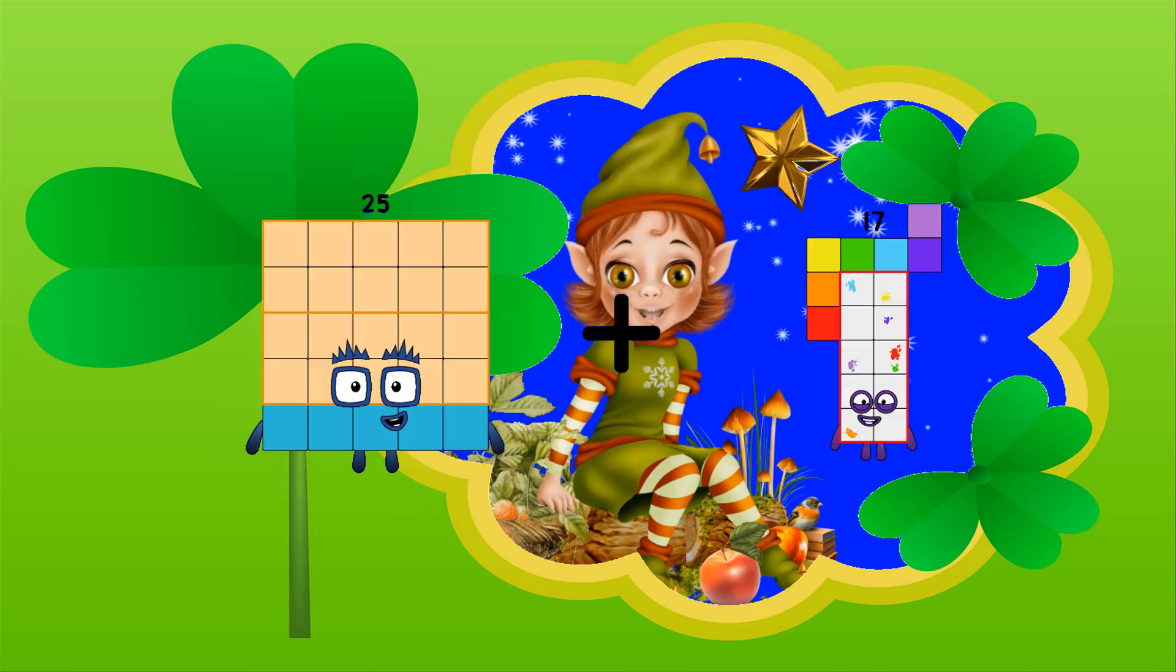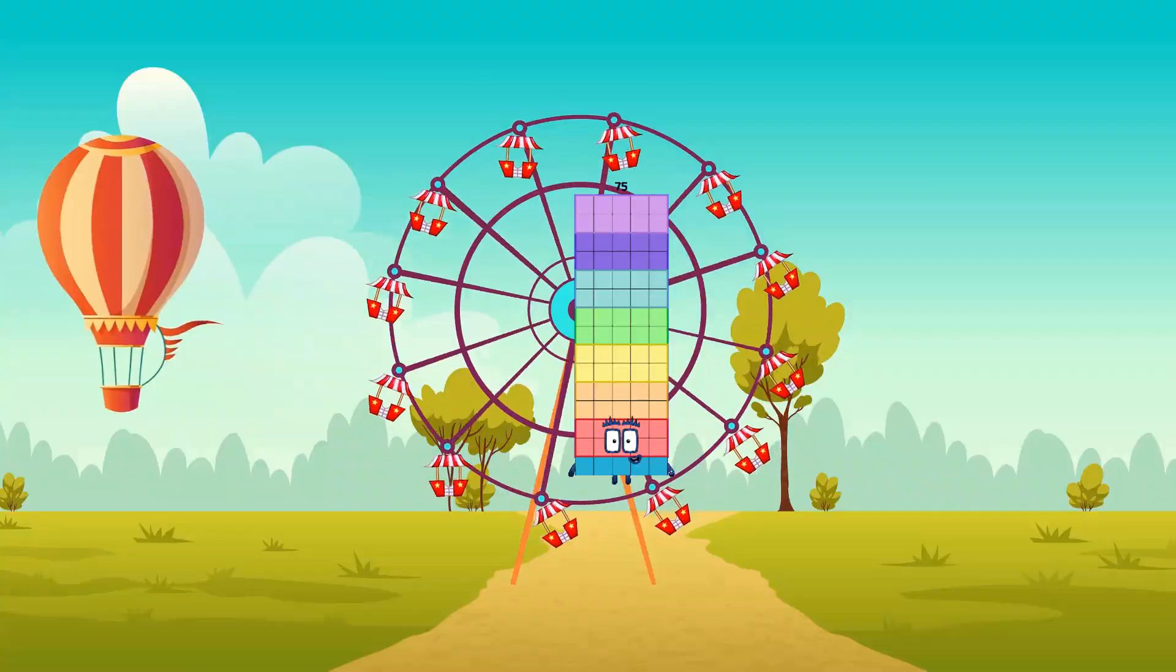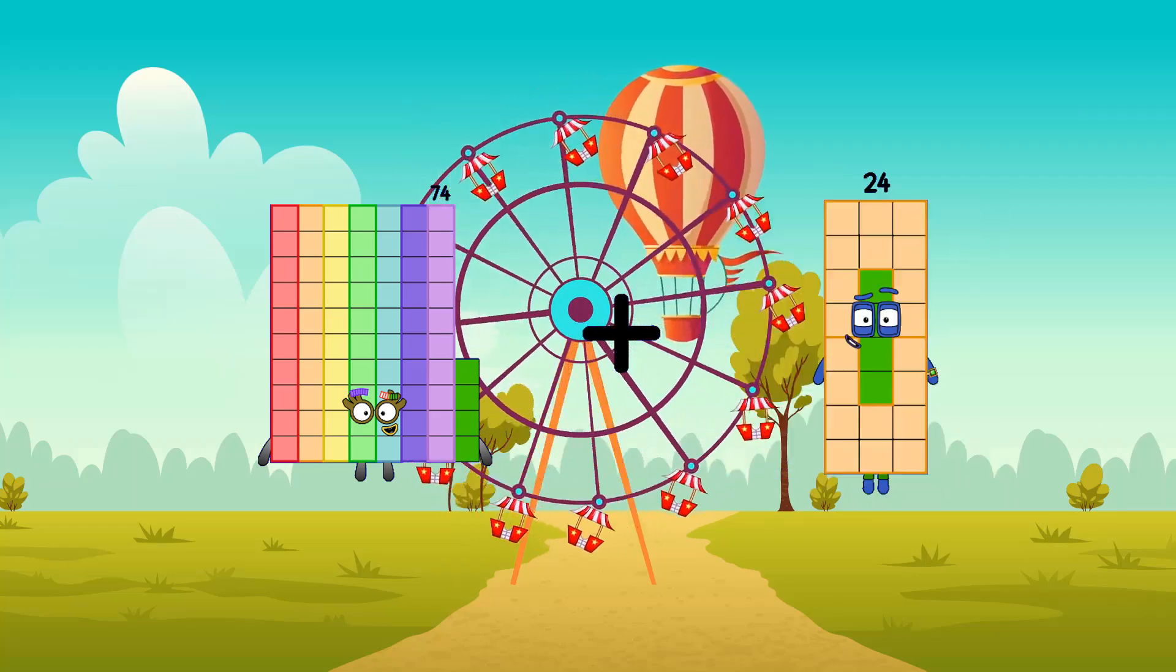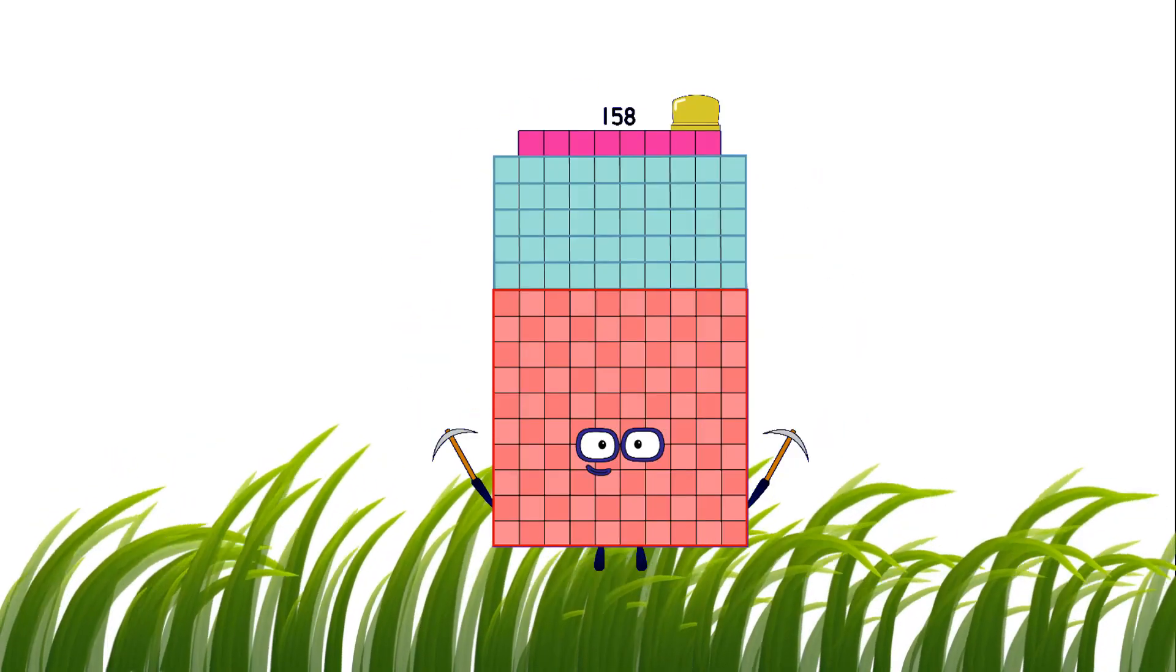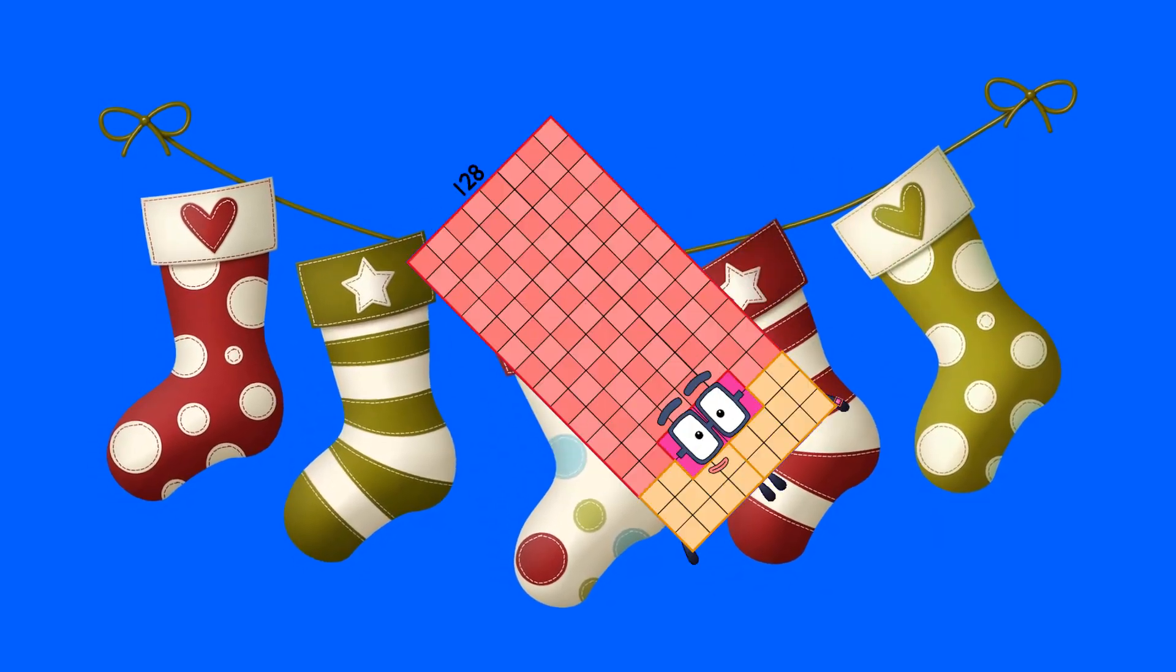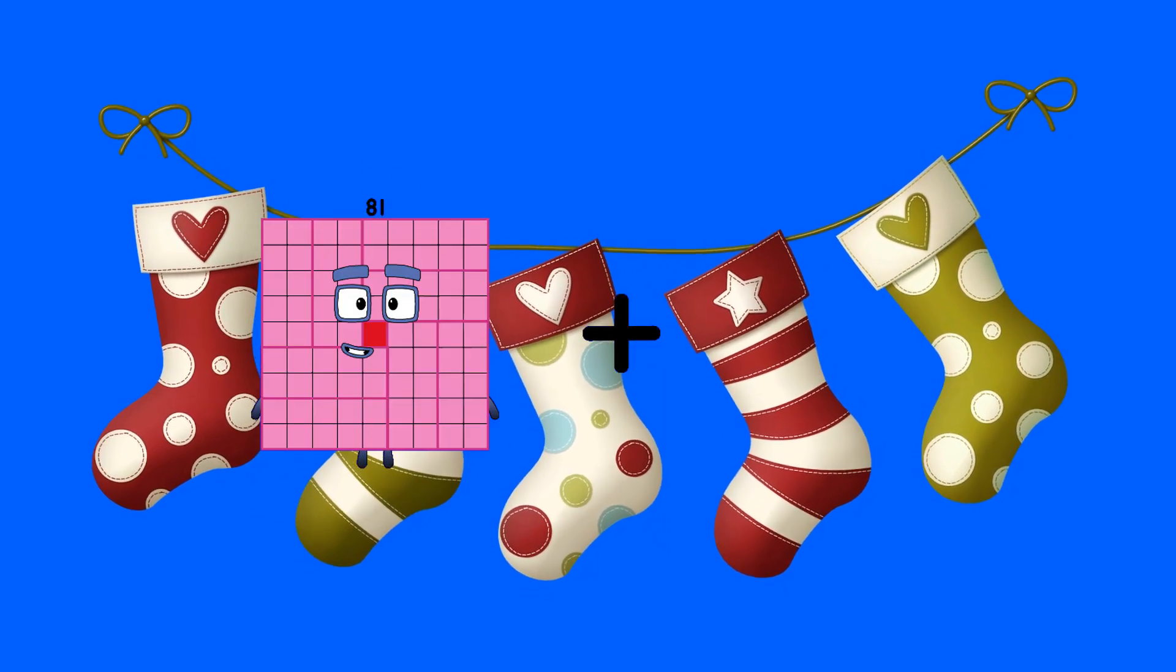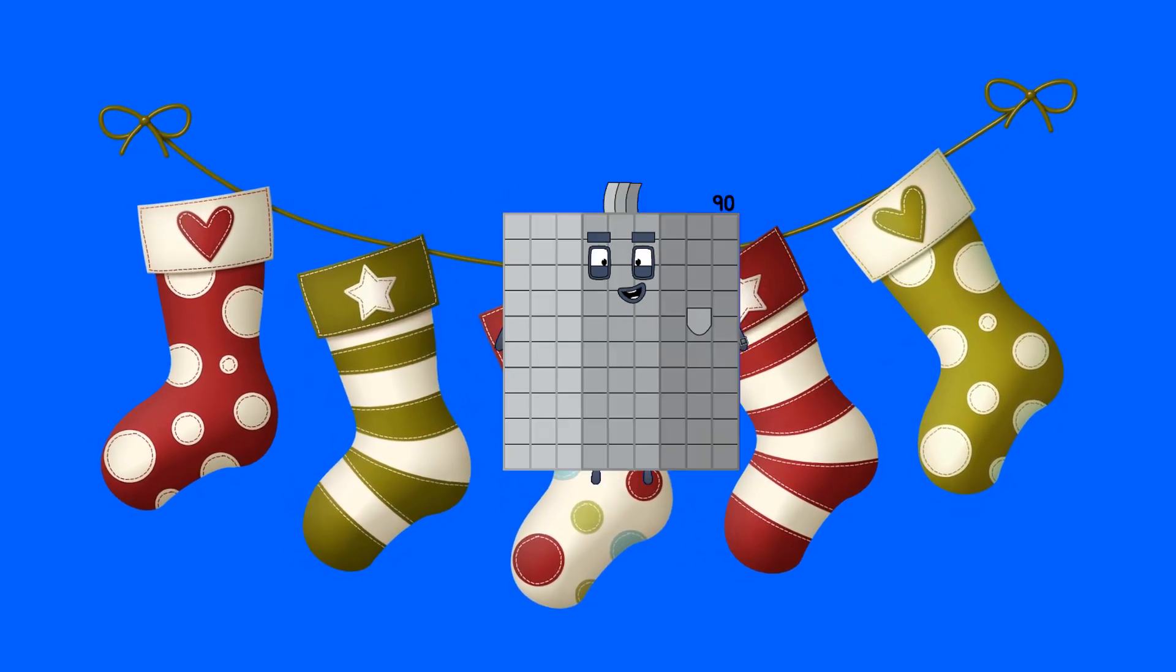25 plus 50 equals 75. 74 plus 84 equals 158. 21 plus 107 equals 128. 81 plus 9 equals 90.